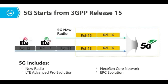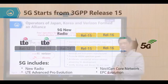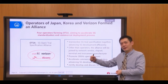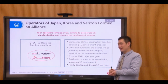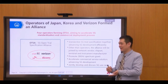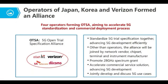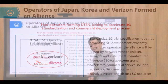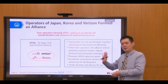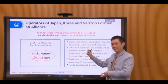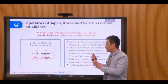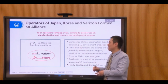In the year 2016, some operators from the United States, Korea, and Japan formed one organization named OTSA — the Open Trial Specification Alliance. Their purpose was to push 5G standardization faster. They were not satisfied with the 3GPP pace, feeling it was too slow, and wanted to define their own standard for 5G.